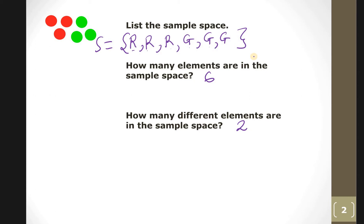Now let's do probability. What is the probability of getting a red marble if you put your hand in the jar without looking? There are six elements total. How many red marbles are in the jar? One, two, three — so three out of six.